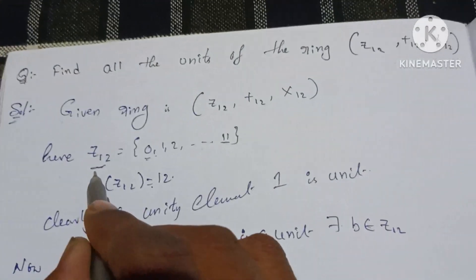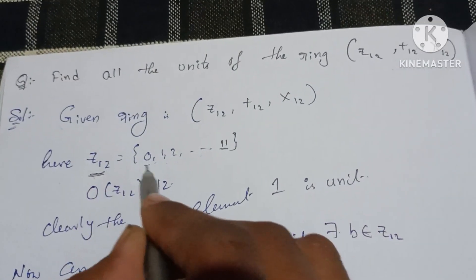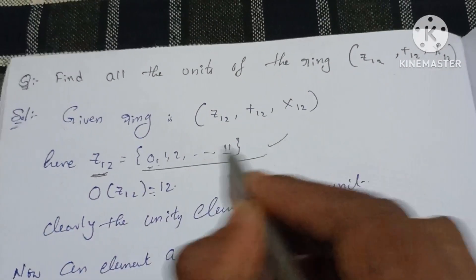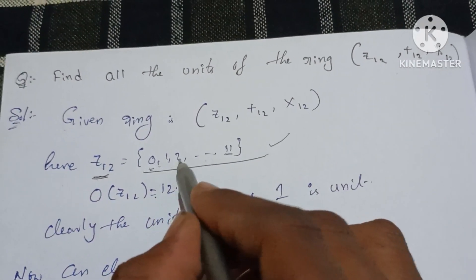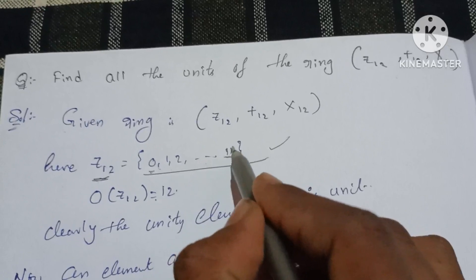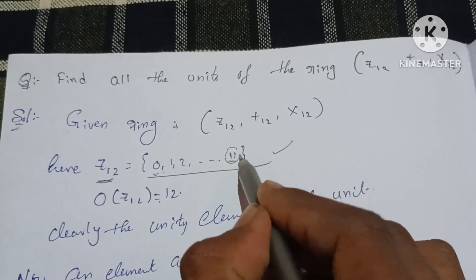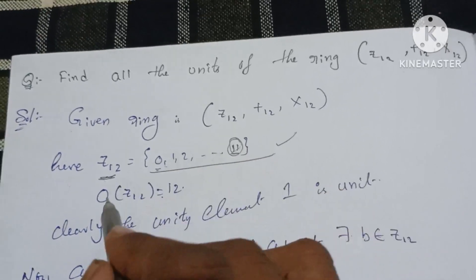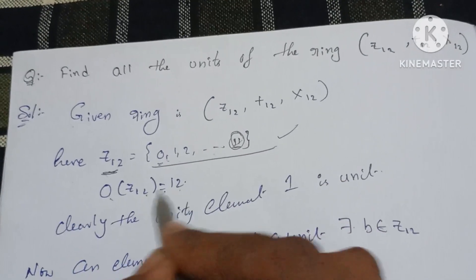So, Z₁₂ is equal to the elements: 0, 1, 2, and so on. The ring Z₁₂ has 12 elements.